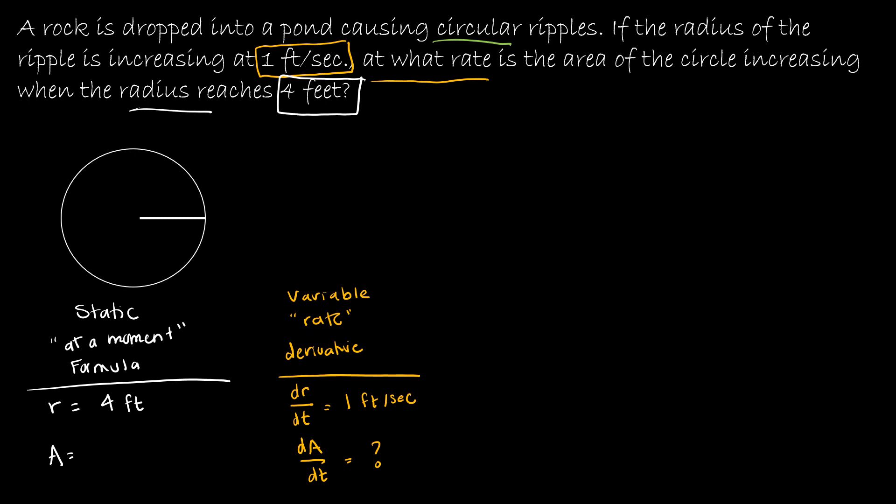So the only thing I'm missing now is A. What's A? Well, A can be a formula. And in this case, we're dealing with a circle. So A is π r². That's a great place to start is to figure out all the static values and all the variable values.